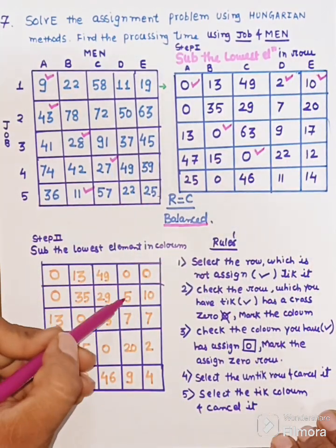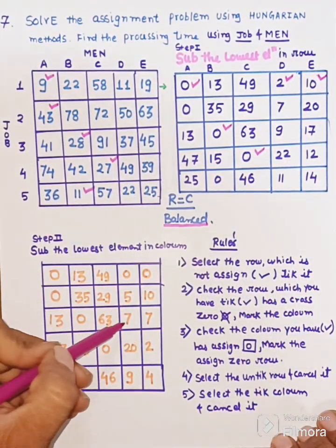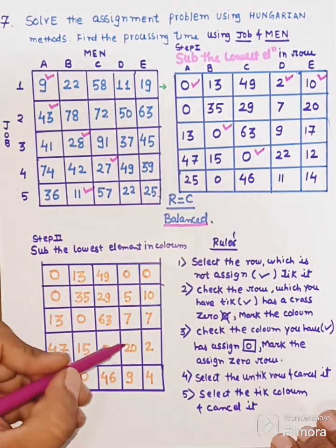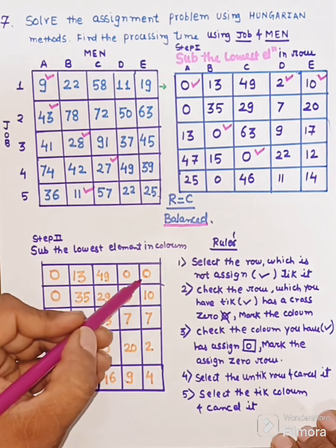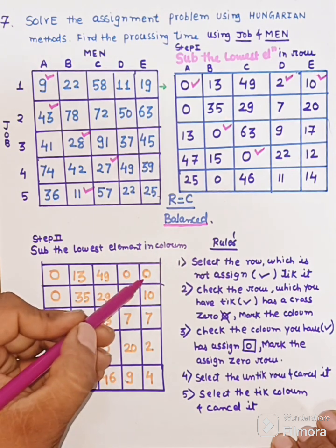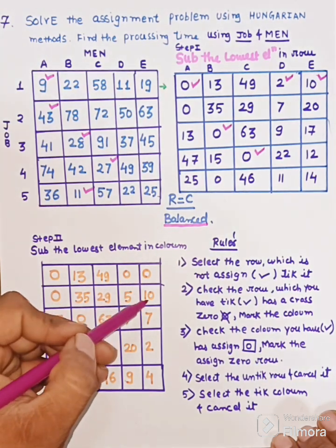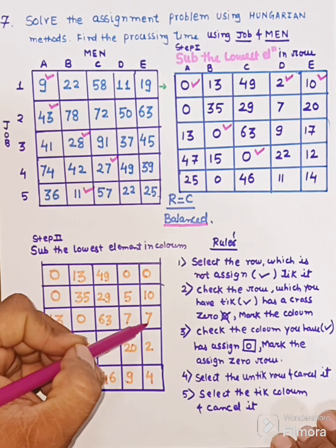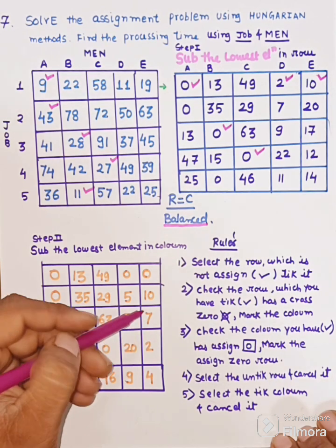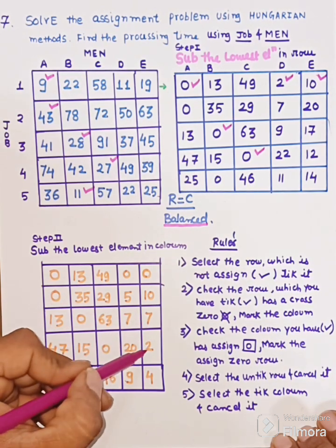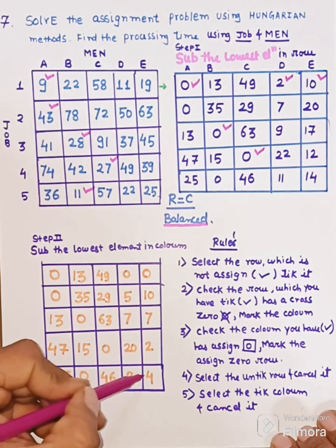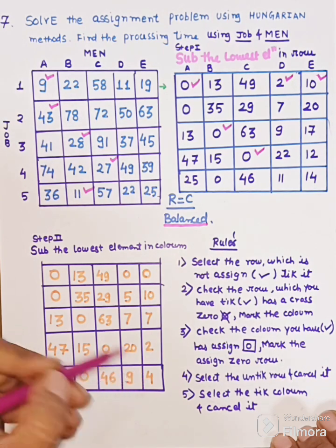In the fourth column, the lowest element is 2, giving: 0, 5, 7, 29. In the fifth column, the lowest element is 10: 10 minus 10 is 0, 20 minus 10 is 10, 17 minus 10 is 7, 12 minus 10 is 2, 14 minus 10 is 4.